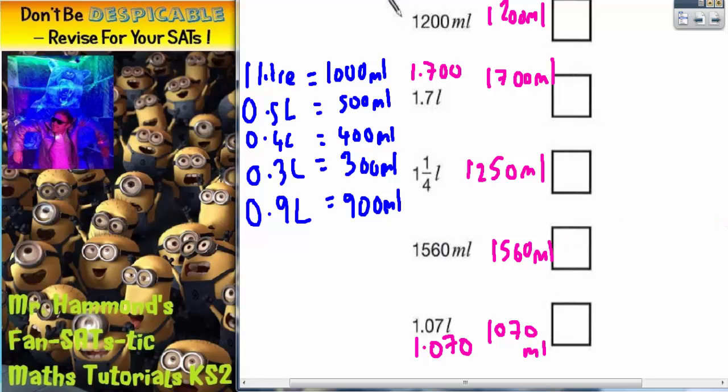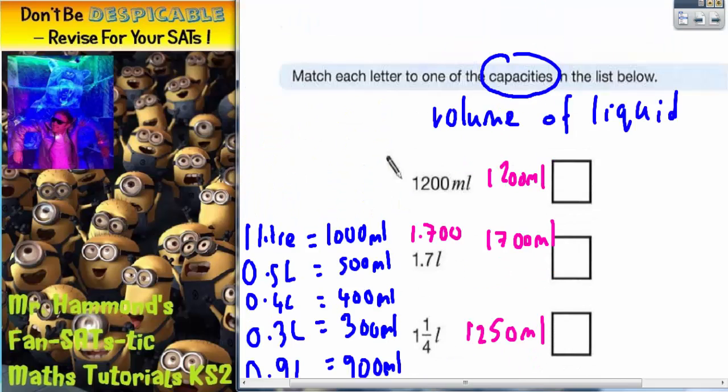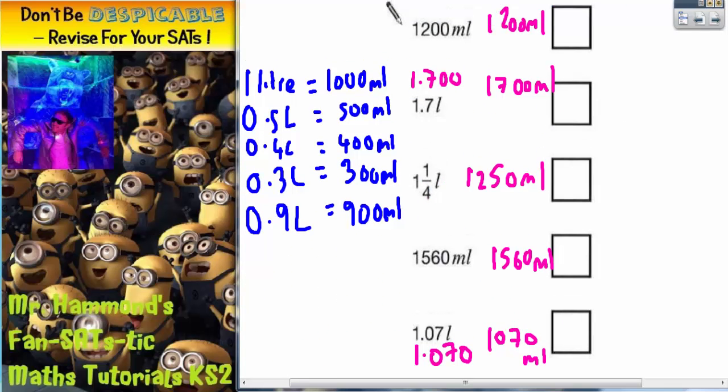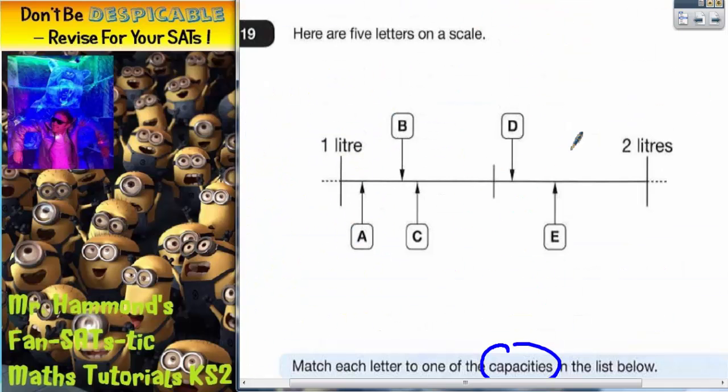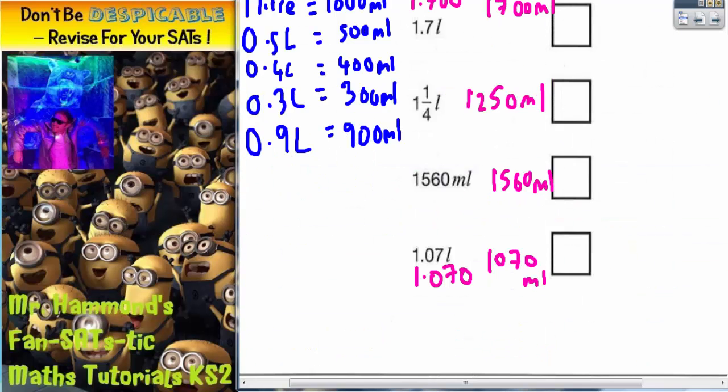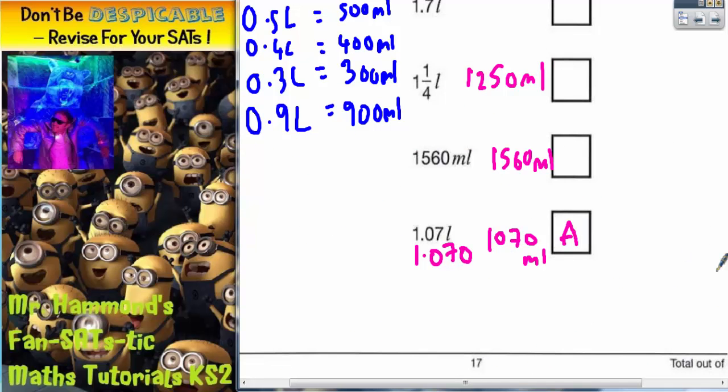Now I've got all of them in millilitres, I can start thinking where they go on the scale. So the smallest one of these is 1,070. So the smallest one has to go with the first one of the scale, which is letter A. So letter A has to be 1,070.